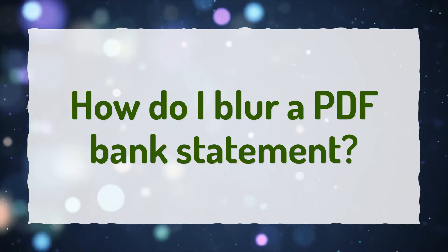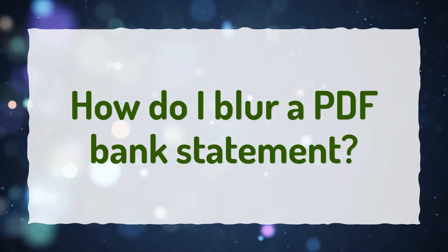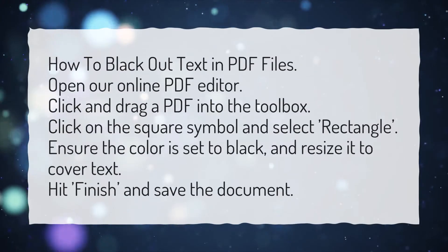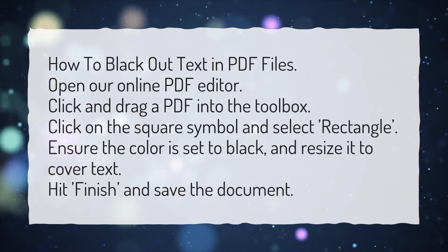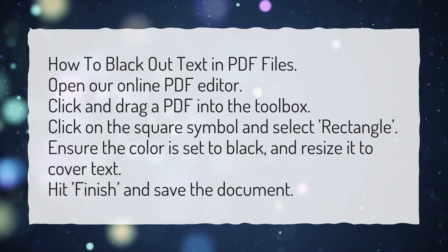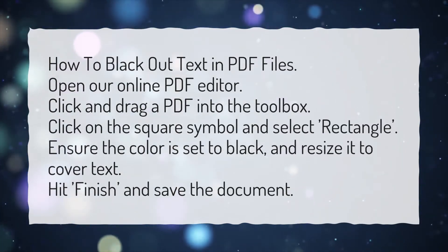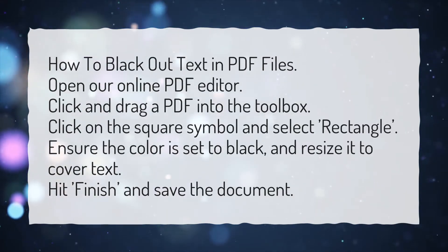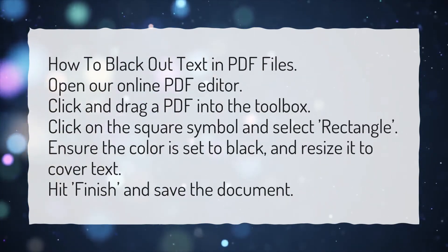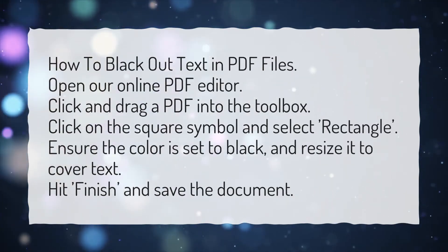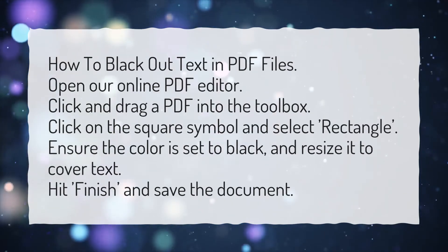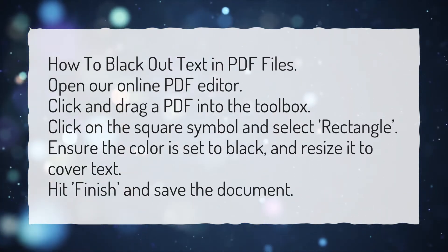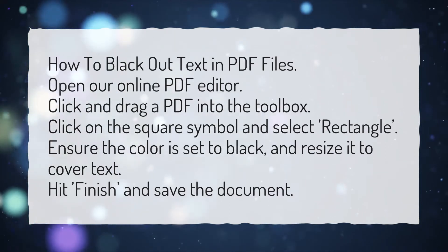How do I blur a PDF bank statement? How to black out text in PDF files. Open our online PDF editor. Click and drag a PDF into the toolbox. Click on the square symbol and select rectangle. Ensure the color is set to black and resize it to cover text. Hit finish and save the document.